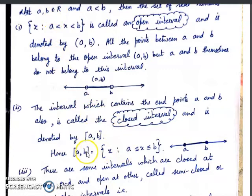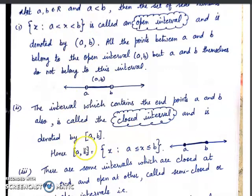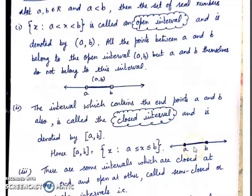Intervals are always defined for real numbers, not for other number systems like integers or rationals. We represent only subsets of real numbers as intervals, because on the number line all types of numbers are included — whether they are integers, rational, or irrational — so every number between A and B is included.